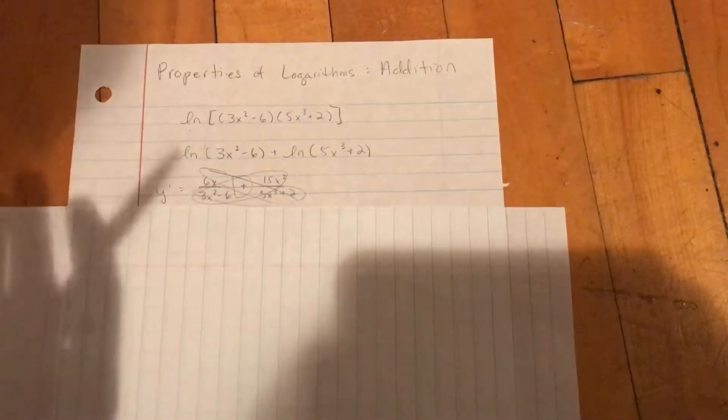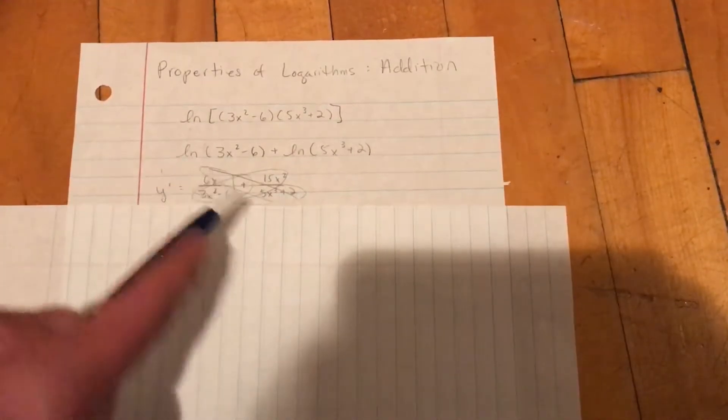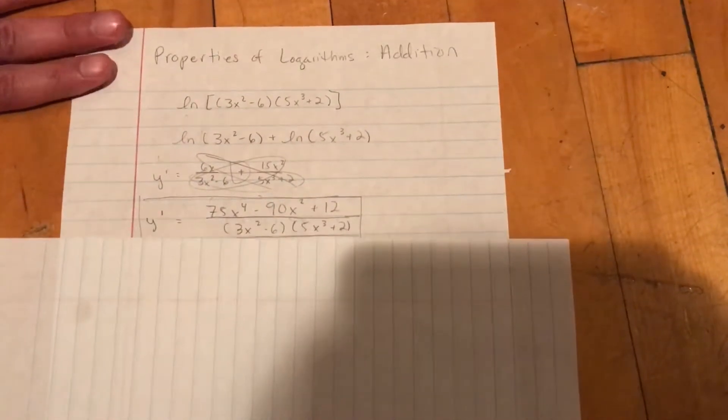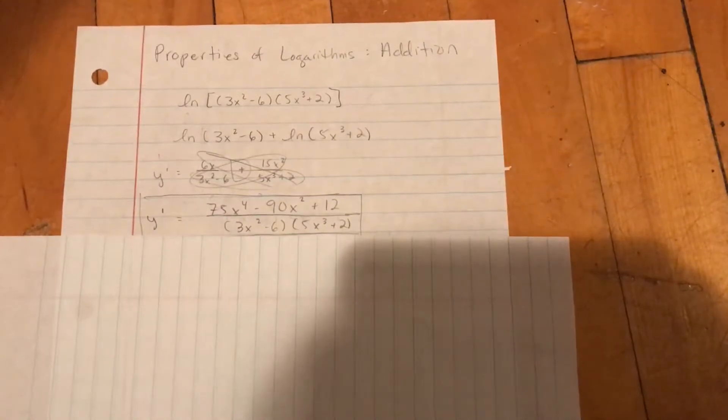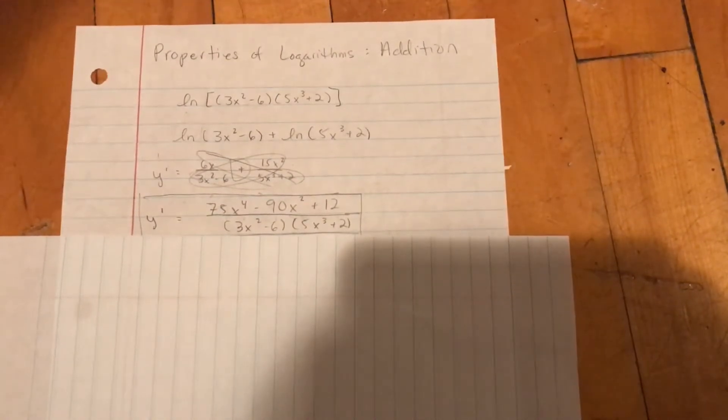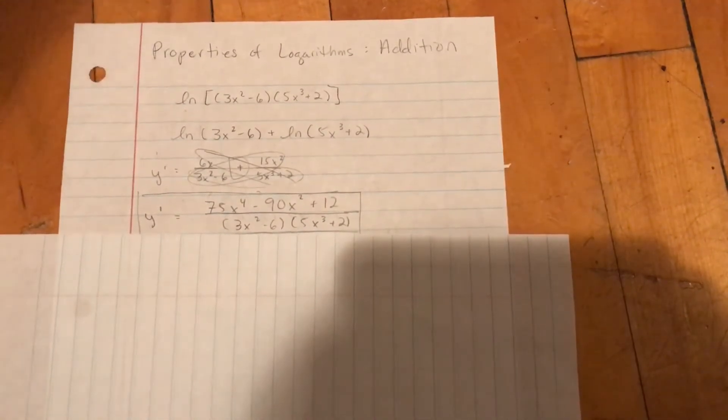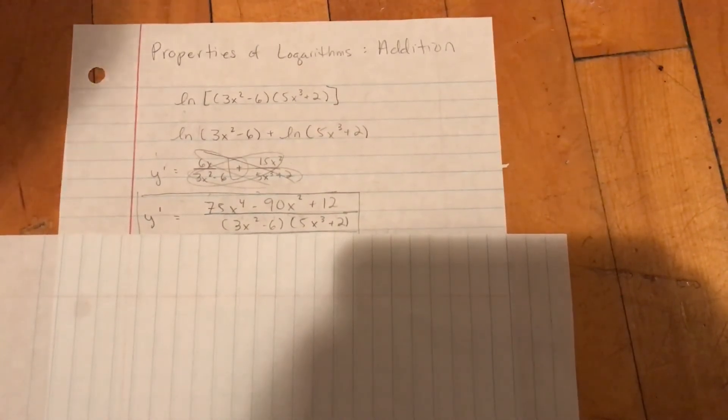Now to simplify this, which you're most likely going to have to do, you need to go ahead and butterfly it and then you end up with y prime is equal to 75x to the fourth minus 90x squared plus 12 over 3x squared minus 6 times 5x cubed plus 2. And that's how you do logarithms with the property addition.